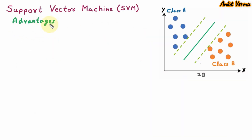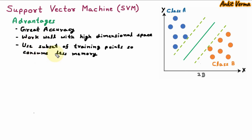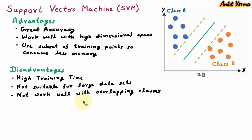Now we are learning the advantages of support vector machine. The first is great accuracy. Next is it works well with high-dimensional space. Next is it uses a subset of training points, so it consumes less memory. These are the advantages of SVM. Now the disadvantages: the first is high training time. Next is it is not suitable for large datasets. Next is it does not work well with overlapping classes. So these are the disadvantages of SVM.